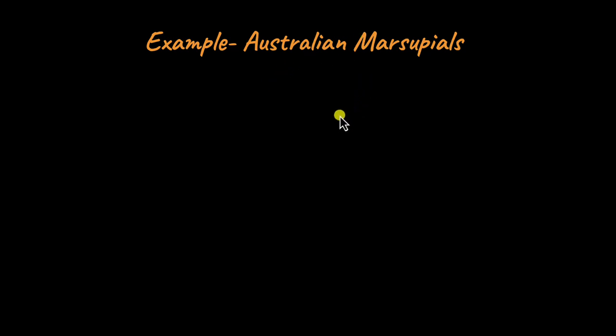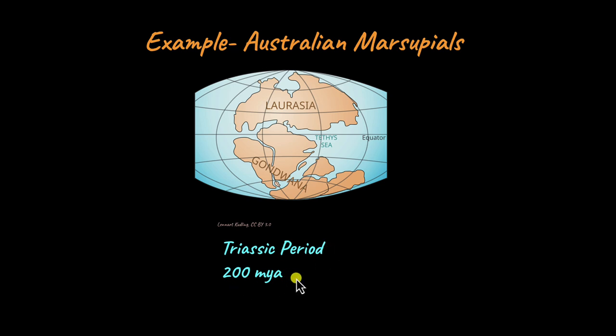An example of adaptive radiation that is convergent evolution is the Australian marsupials. Marsupials are a type of mammal in which the young are born in a very underdeveloped stage and usually stay in a pouch-like structure inside their mother until they're old enough to survive on their own. Examples include kangaroos, and a lot of marsupials are endemic to Australia. During the Triassic period, about 200 million years ago, the Earth had two huge supercontinents: Laurasia and Gondwana. What is present-day Australia was actually part of Gondwana, along with Antarctica.